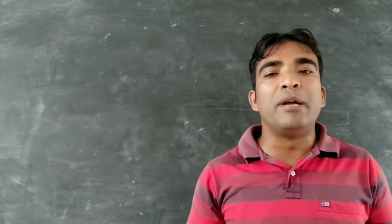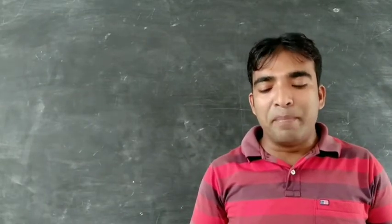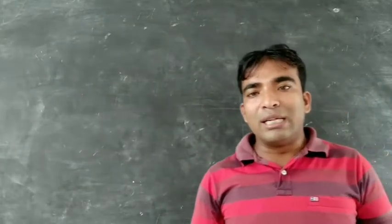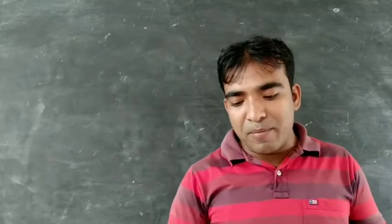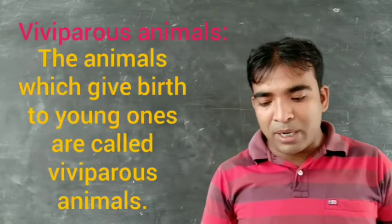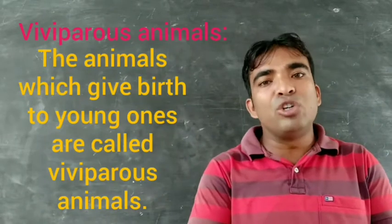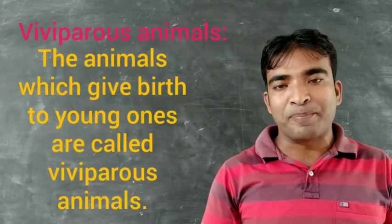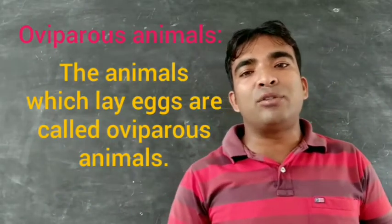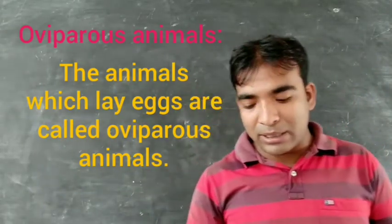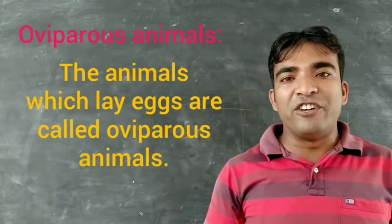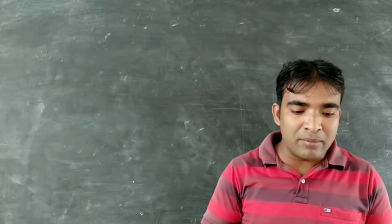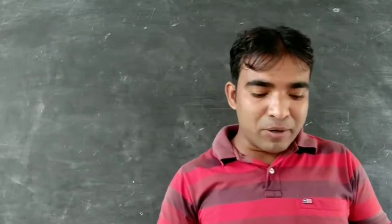When the fetus is fully mature, the female body gives birth to the young ones. Animals that give birth to young ones are known as viviparous animals — for example, human beings, cows, dogs, etc. Animals that do not give birth to young ones but instead lay eggs are known as oviparous animals — for example, toads, fish, hens, etc. This is the classification of animals on the basis of giving birth: viviparous and oviparous.